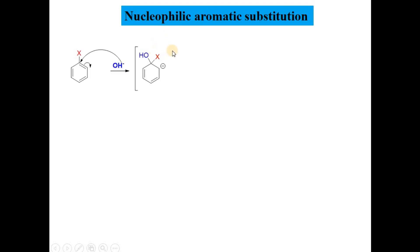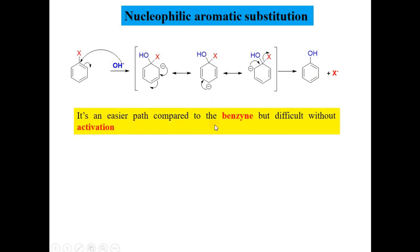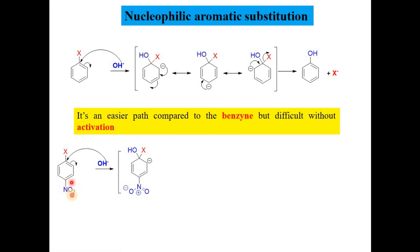The second way is nucleophilic aromatic substitution via addition-elimination. Here, nucleophilic substitution is carried out by activating groups — specifically electron-withdrawing groups. This is an easier path compared to benzyne but still difficult without activation. The activation is carried out with the help of an electron-withdrawing group like a nitro group. The nitro group withdraws electrons from the benzene ring so that the nucleophile OH attacks at the position of X (the para position), and the electron density shifts to the ortho position.